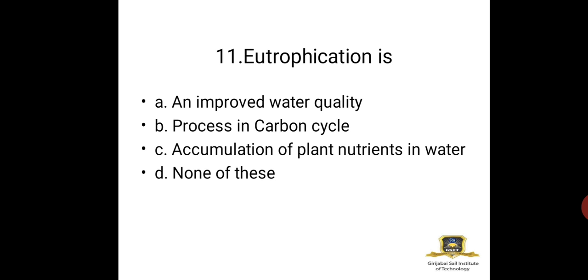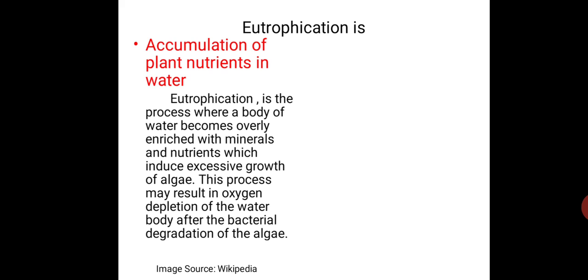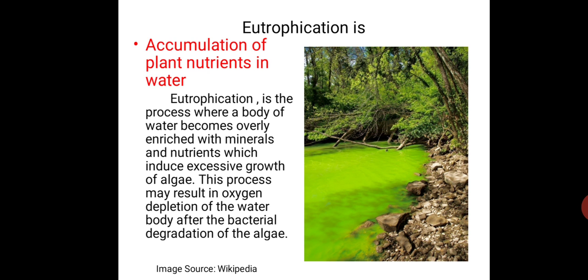Question 11: Eutrophication is — an improved water quality process, part of the carbon cycle, accumulation of plant nutrients in water, or none of these? Eutrophication clearly means the accumulation of plant nutrients in water. It is the process where a body of water becomes overly enriched with minerals and nutrients, inducing excessive growth of algae. This process may result in oxygen depletion of the water body after bacterial degradation of the algae. The greenish color visible in water bodies indicates algae growth.